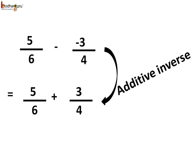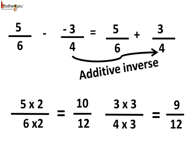Now let us subtract a negative rational number. Subtract minus 3/4 from 5/6. The additive inverse of minus 3/4 is 3/4. So we get 5/6 plus 3/4. The LCM of 4 and 6 is 12. So we multiply both the numerator and the denominator of 5/6 by 2: 5 multiplied by 2 is 10, and 6 multiplied by 2 is 12, giving us 10/12.